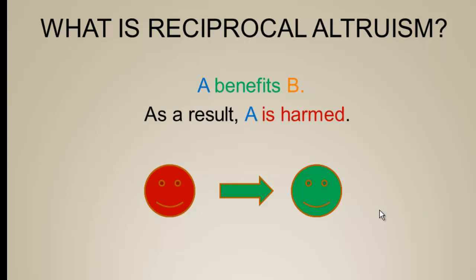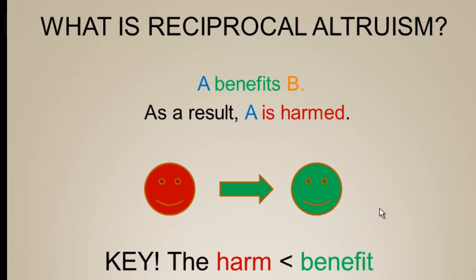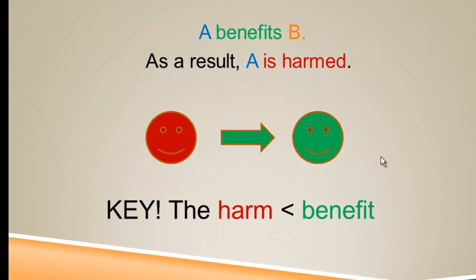The key thing that Trivers hit on is that the harm needs to be much less than the benefit. If this is the case, by trading altruistic acts two individuals can both come out ahead.